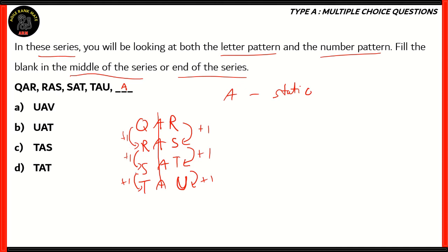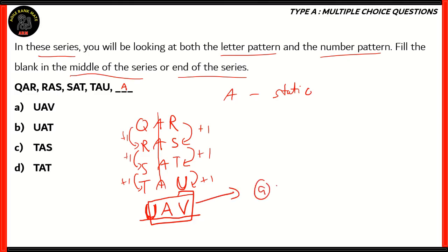So Q becomes R, R becomes S, S becomes T for the first letter. R becomes S, S becomes T, T becomes U for the third letter. For the missing triplet, A obviously has to be in the middle. Since it comes after T-A-U, the first letter would be the letter next from T, which is U. And since in the last triplet U was the third letter, following alphabetical order the next letter would be V. Therefore, the correct triplet is U-A-V, meaning option A is the right option.